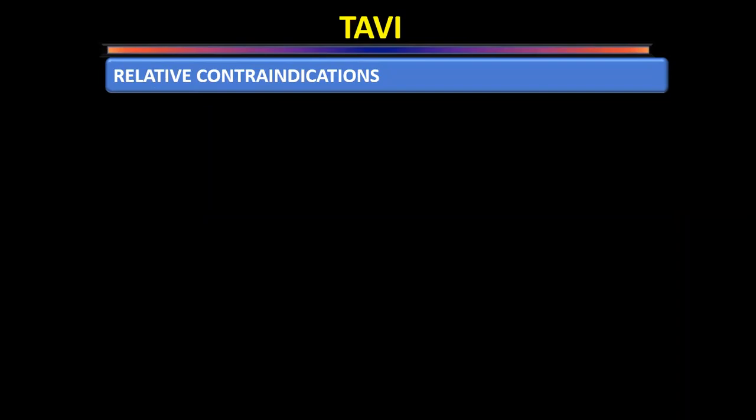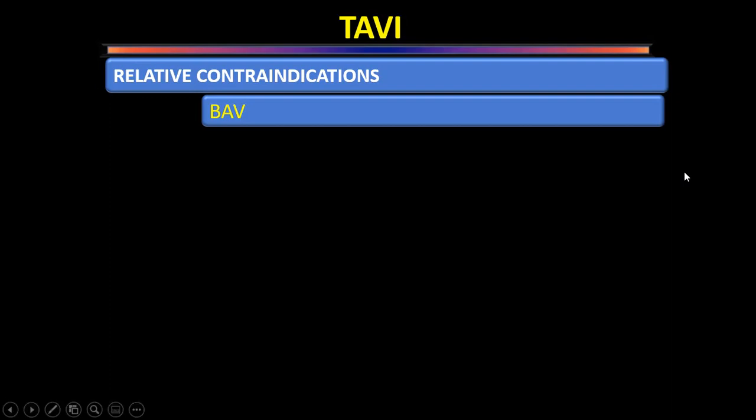Relative contraindications for TAVI include: bicuspid aortic valve (all major trials excluded bicuspid valves; there are smaller series and case reports), untreated coronary artery disease, ejection fraction less than 20%, hemodynamic instability, severe pulmonary artery hypertension (which makes transapical approach particularly difficult), and LV clot or aortic plaque.